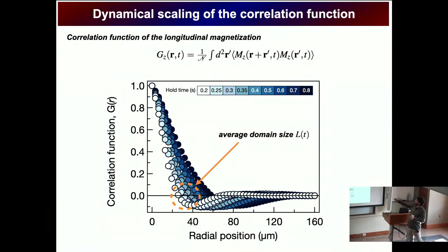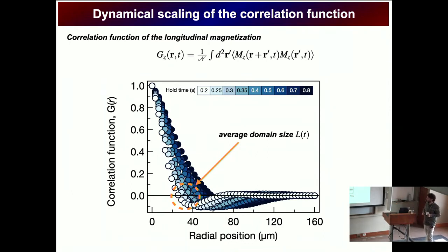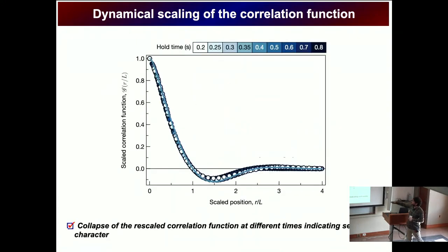To argue about universality, I track the correlation function of the longitudinal magnetization, shown for different evolution times with experimental data points. The correlation function decreases with increasing distance, crosses zero at the average domain length. When I rescale the correlation function with the individual domain sizes for each time instance, all curves collapse onto each other, exhibiting self-similar behavior — this is the signature of universal dynamics.